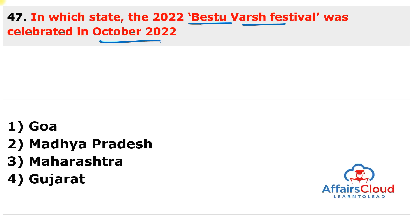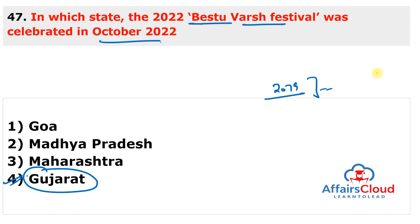Next question: in which state was the Bestu Varash festival celebrated in October 2022? The answer is Gujarat. Bestu Varash is a Gujarati New Year festival, also known as Vikram Samvat 2079. It is celebrated with traditional and cultural values of Gujarati communities across the globe. Bestu Varash is celebrated as a new year in Gujarat as part of the five-day Diwali celebration.